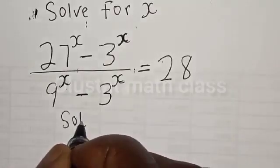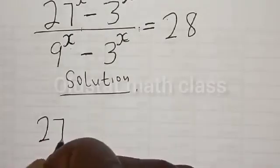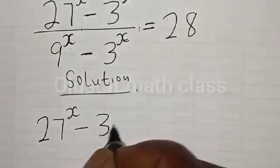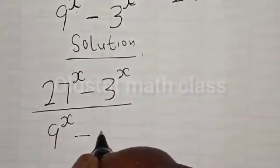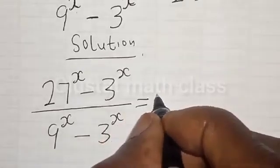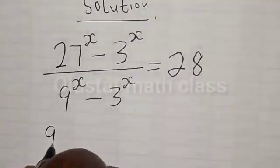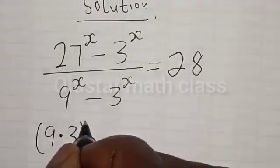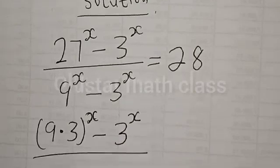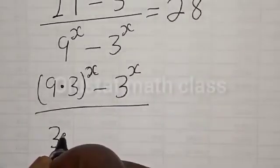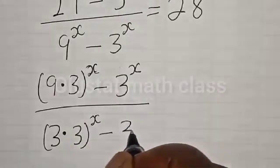Solution. We have the given equation: 27 raised to power s minus 3 raised to power s, divided by 9 raised to power s minus 3 raised to power s, is equal to 28. Then 27 can be rewritten as 9 multiplied by 3, raised to power s, minus 3 raised to power s, divided by 9, which is 3 multiplied by 3 raised to power s, minus 3 raised to power s.